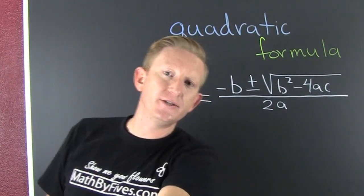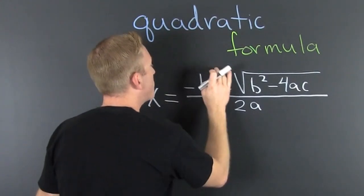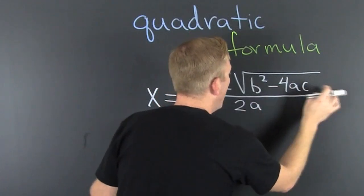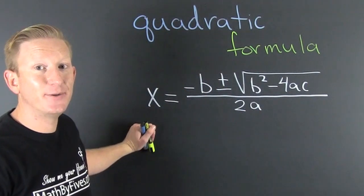It's so famous, even the British know it. X is equal to minus b plus and minus square root b squared minus 4ac all over 2a. Or maybe that's the Geico Gecko.